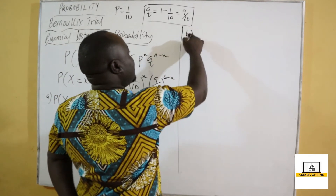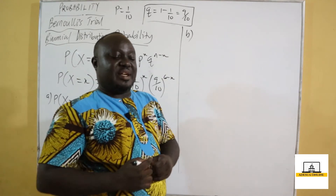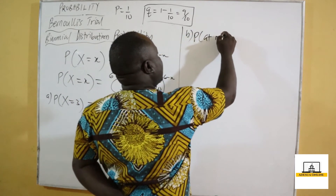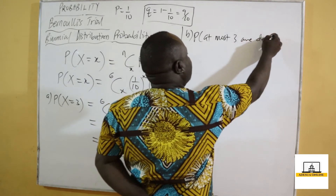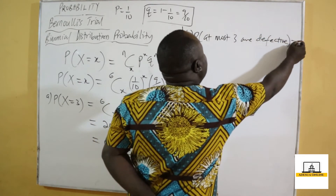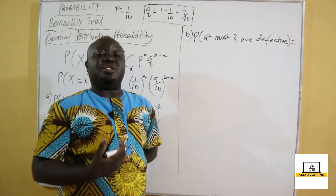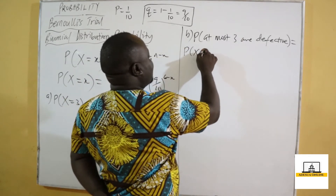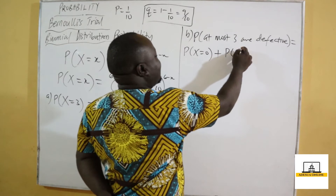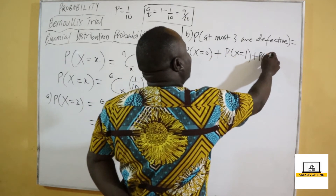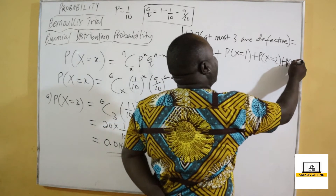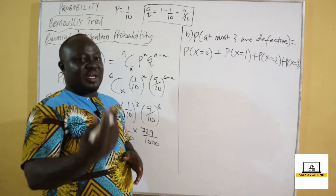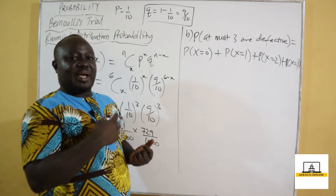Part B asks for the probability that at most three are defective — meaning not more than three. So we calculate for x equals zero, plus x equals one, plus x equals two, plus x equals three. At most three means we can have zero, one, two, or three defective parts.